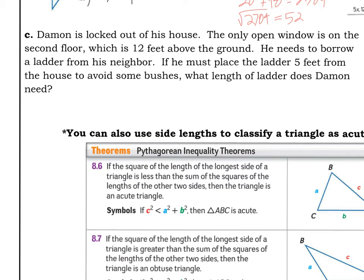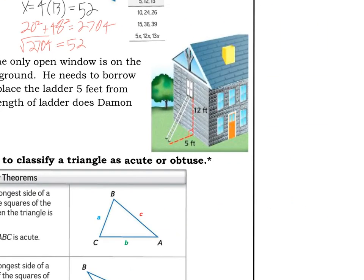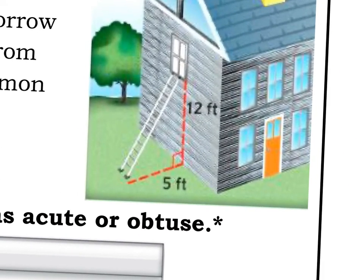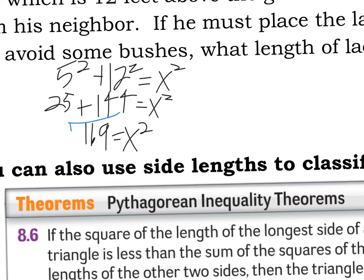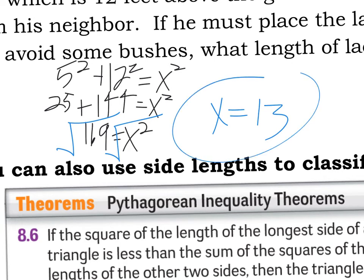Damon is locked out of his house. The only open window is on the second floor, 12 feet above the ground. If he must place the ladder 5 feet from the house to avoid some bushes, what length ladder does he need? Looking at the picture, 5 is on the bottom and 12 is on the side, with the right angle at the base making the ladder the hypotenuse. This is a 5-12-13 right triangle, so the answer is 13 feet. Using the Pythagorean theorem: 5 squared plus 12 squared equals 25 plus 144 equals 169, and the square root of 169 is 13.